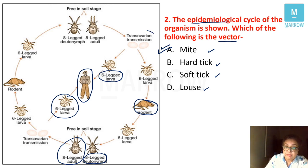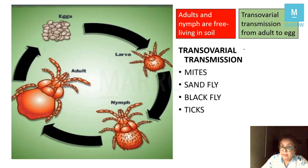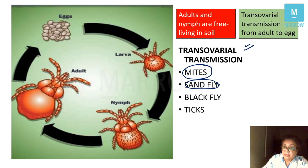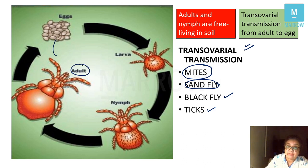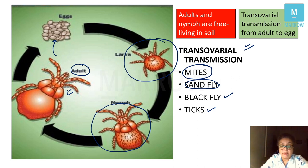An important point: trans-ovarian transmission. The eggs also get infected when the adult arthropod lays eggs. Trans-ovarian transmission is seen in case of mites, sandfly, black fly, and ticks. So for these vectors, infection is transmitted from the adult to the eggs as well. That's our six-legged larva of mite, with eight-legged nymph and adult mite.